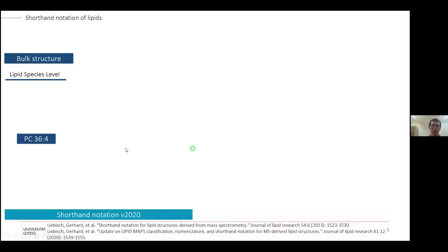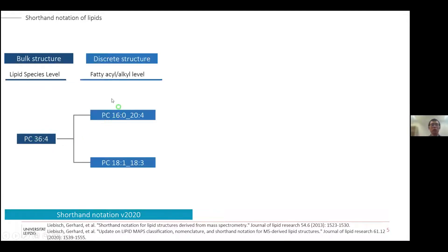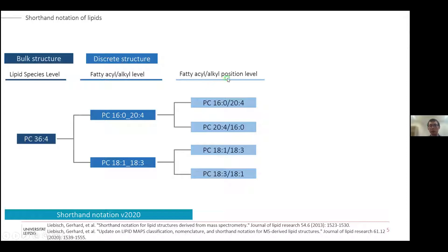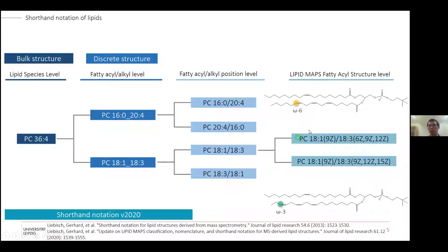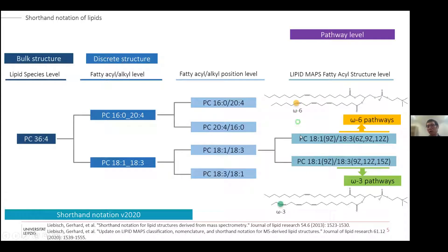According to this definition and his tutorial, we have bulk level structures written with just the lipid class, sum of carbon numbers, and sum of double bonds. Going further, there can be different fatty acid residues — at this level we don't know the position of each fatty acid, but we know there are two types. Then at the fatty acid position level, we know which is on SN1 and which is on SN2. In databases and biology pathways, we also need exact positions of double bonds and cis/trans information, and whether they are omega-3 or omega-6 fatty acids, because they go to different pathways.